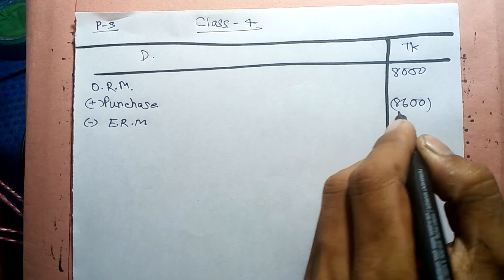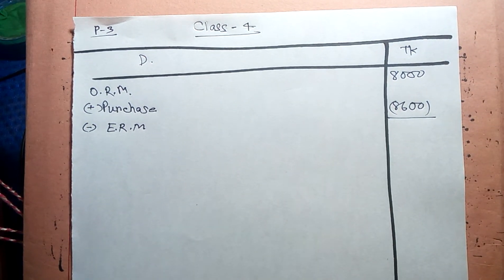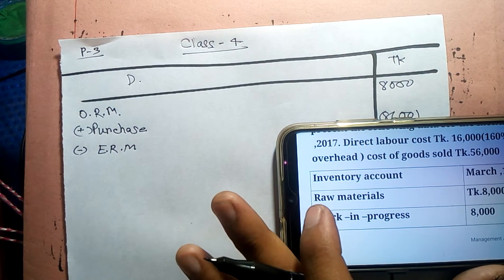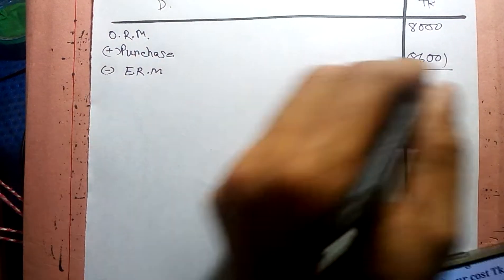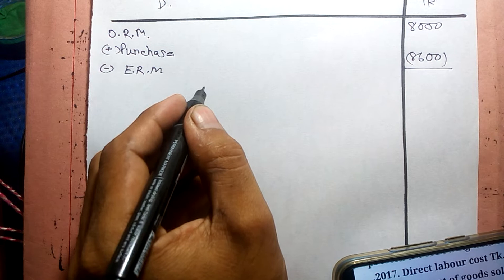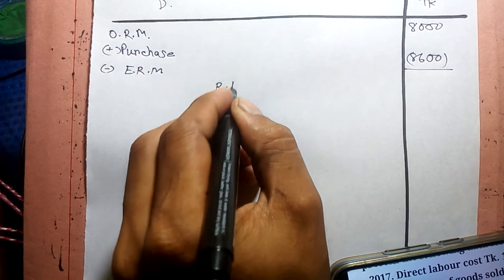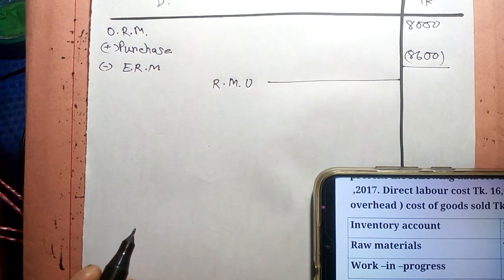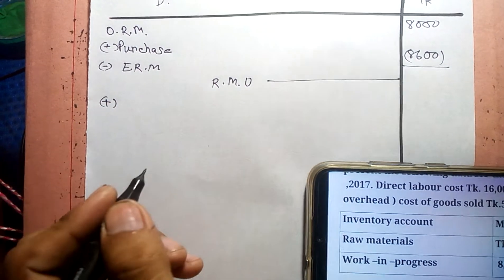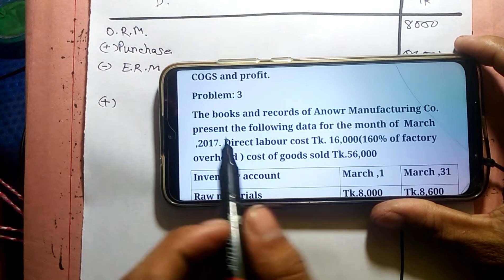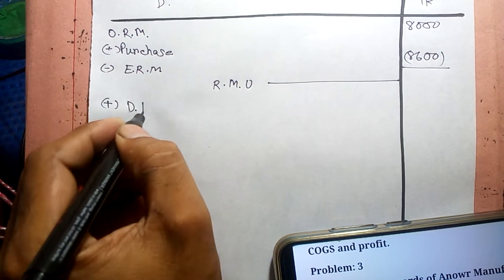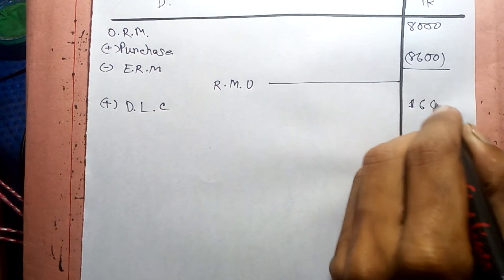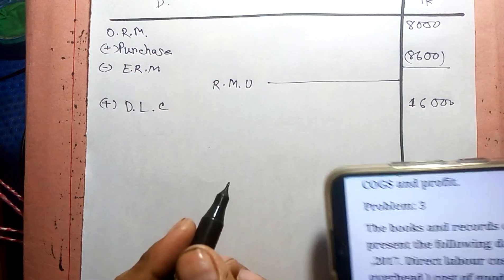The ending raw materials figure is 800, and when it is 50% we need to remove the working figure. The raw materials used figure is then derived. Raw materials used is a key item here, and it relates to the direct labor cost as well — the direct labor cost is shown separately.